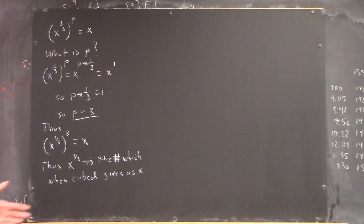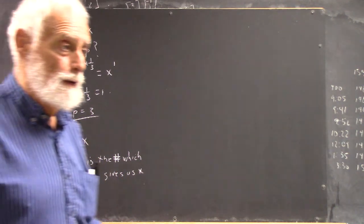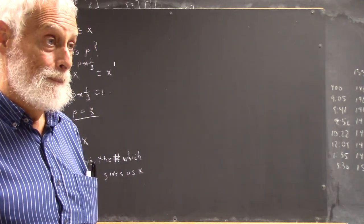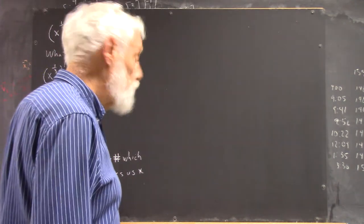What do you call the number which when we cube it gives us x? Well, what's the number that when we square it gives us x? It's the square root of x, right? So we call this the cube root of x.